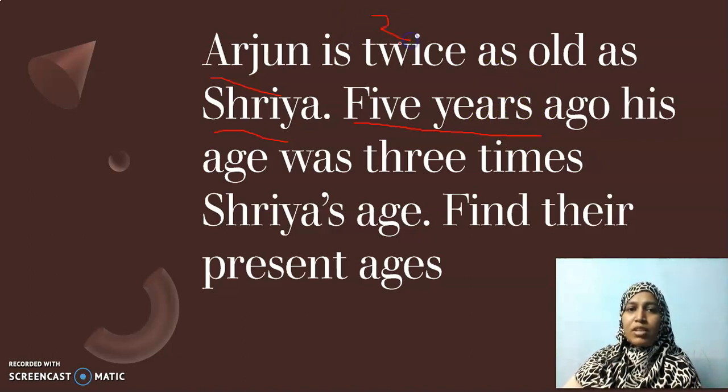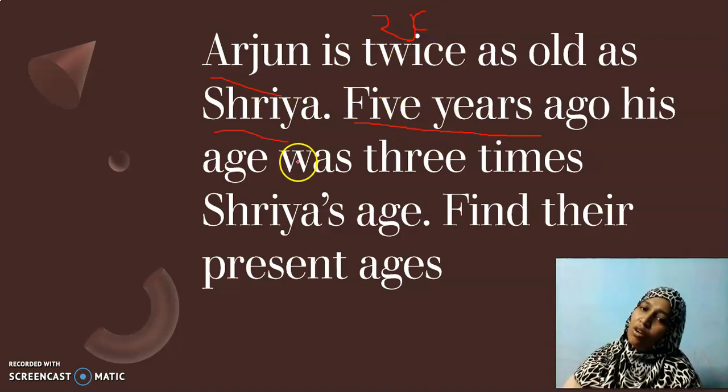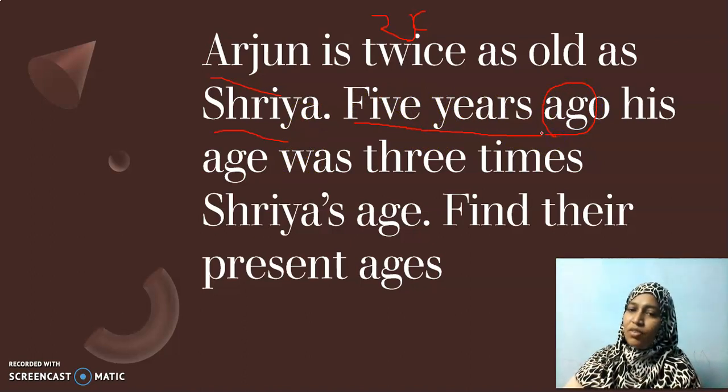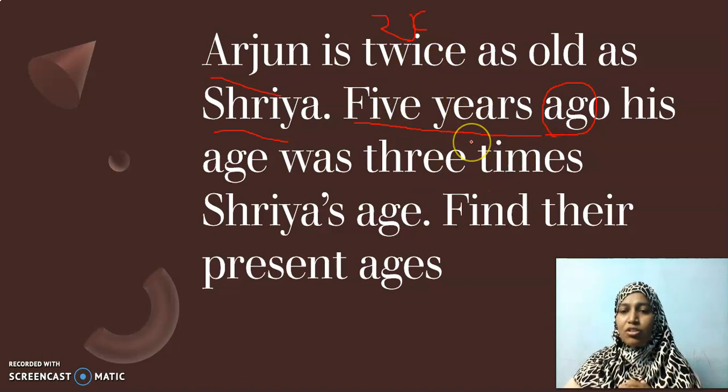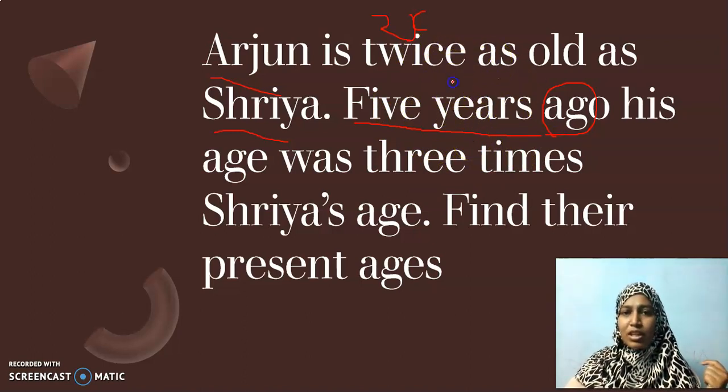Twice in the sense, two times as old as Shriya. So you will have 2X present age. Five years ago, what is mean by ago? Before or after? Yes. It is five years ago means before. Before, we will have age to be less. So Arjun's age will be 2X minus 5. And Shriya's age will be X minus 5. Do you understand now?